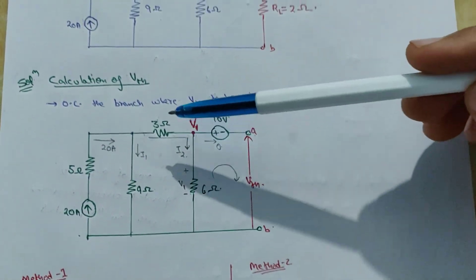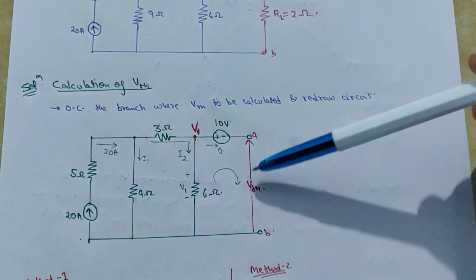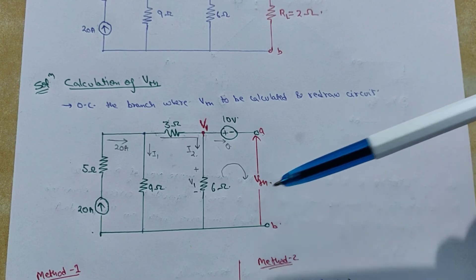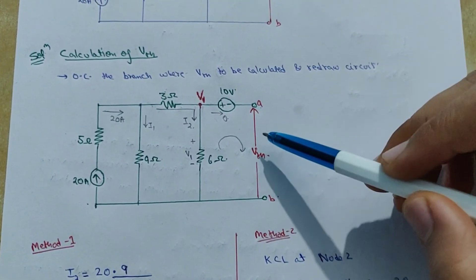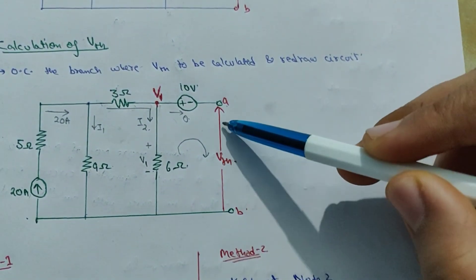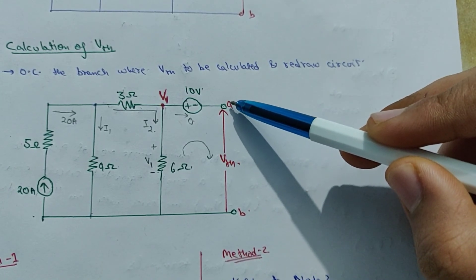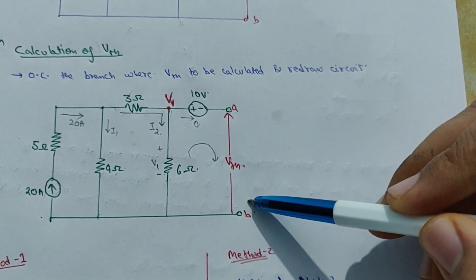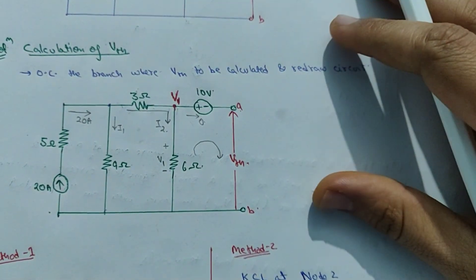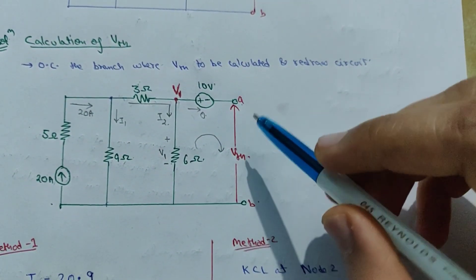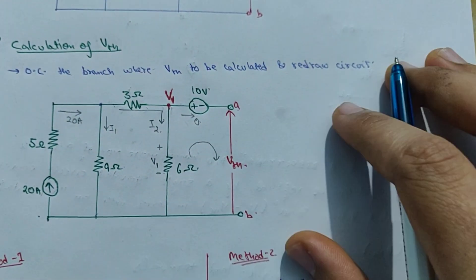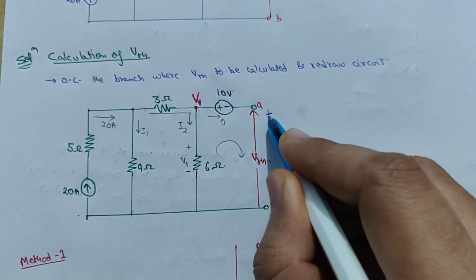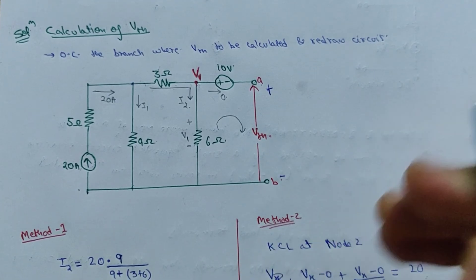I have open circuited and redrawn the circuit. The potential between these two points is VTH, the Thevenin voltage. You should carefully see the arrow direction here — the arrow is pointed upwards, which means I have assumed A is at a higher potential than B. So the polarity of VTH is plus on A and minus on B.